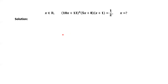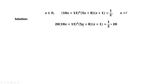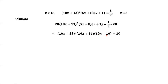How? Here is the detail. For this given equation, multiply both sides by 20. Note that 20 equals 2 times 10. We use 2 times (5x + 8), which gives 10x + 16. We use 10 times (x + 1), which gives 10x + 10. And 1/2 times 20 equals 10.